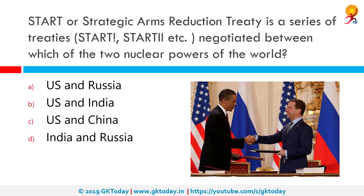START, or Strategic Arms Reduction Treaty, is a series of treaties negotiated between which two nuclear powers of the world? The correct answer is the US and Russia. START was a bilateral treaty between the United States of America and the Union of Soviet Socialist Republics on the reduction and limitation of strategic offensive arms. The treaty was signed on 31st July 1991 and entered into force on 5th December 1994.